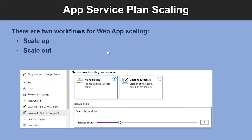When you provision an app service plan, there are two workloads for app service scaling: scale-up and scale-out. Apps can be scaled manually or automatically. With scale-up, you can get more CPU, memory, disk space, and extra features like dedicated virtual machines, custom domains and certificates, staging slots, auto-scaling, and more. You scale up by changing the pricing tier of the app service plan that your app belongs to. Scale-out increases the number of virtual machine instances that you run your app. You can scale out to as many as 30 instances, depending on your pricing tier. App Service environments in the isolated tier further increase your scale-out count to 100 instances. The scale instance count can be configured manually or automatically.